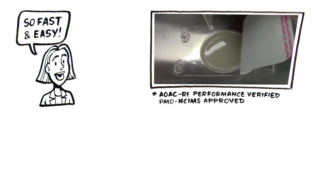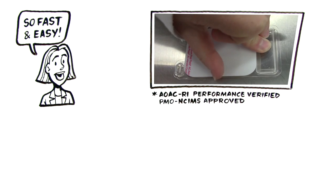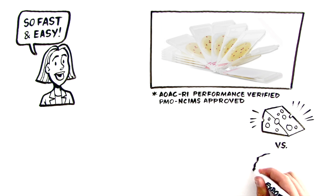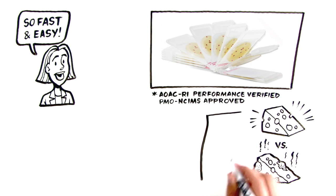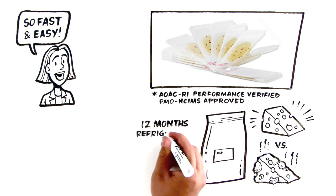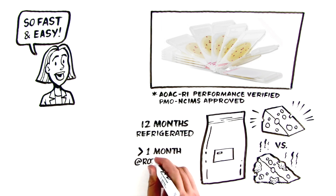AOACRI Performance Verified and PMO NCIMS Approved. Charm Peel Plates are the optimal testing device for total hygienic control of your plant to ensure food quality and shelf life. Peel plates come 50 in a resealable foil-zip bag with a shelf life of 12 months refrigerated, at least one month at room temperature.